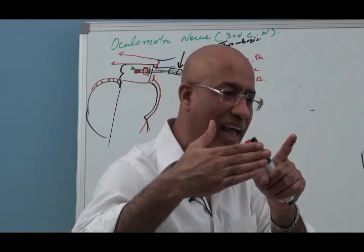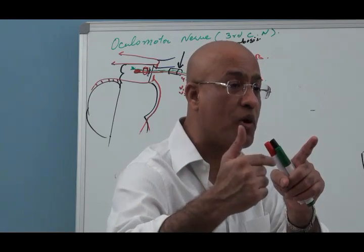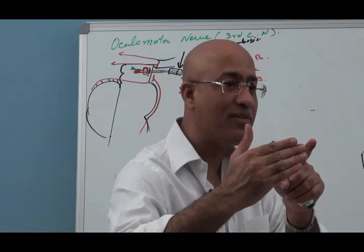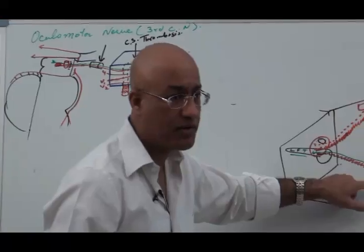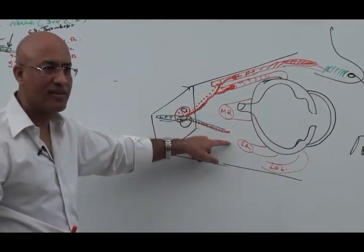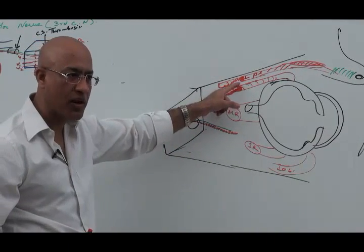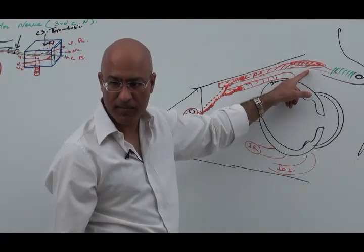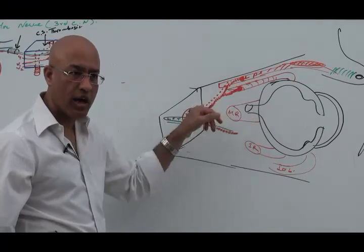Third cranial nerve has not only somatomotor and visceromotor parasympathetic fibers, but also visceromotor sympathetic fibers. The parasympathetic will go with the lower division, which every good doctor knows. Very good doctors only know the sympathetic fibers are going along with the upper division and they supply the levator palpebrae superioris involuntary component. So this was all about the upper division.